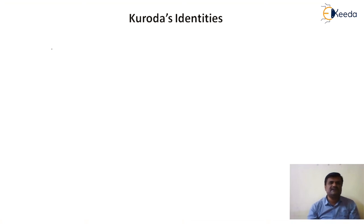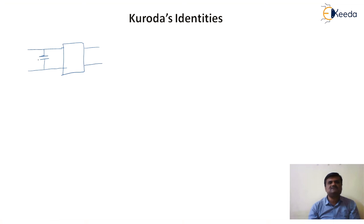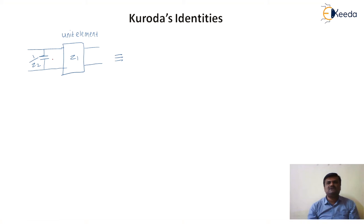In the first Kuroda's identity, we connect a capacitor in series with a unit element. This is a unit element. If the capacitor comes first, then you represent it as 1/Z2, and then Z1 follows. So Z2 comes first, then after that Z1. This is the unit element. We know that Kuroda's identity transforms shunt to series step, or series to shunt.